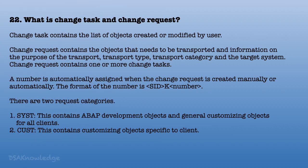What is a change task and change request? A change task contains the list of objects created or modified by a user. A change request contains the objects that need to be transported and information on the purpose of the transport, transport type, transport category, and target system. A change request contains one or more change tasks. A number is automatically assigned when the change request is created; the format is SIDK-number. There are two request categories: SYST, which contains ABAP development objects and general customizing objects for all clients; and CUST, which contains customizing objects specific to a client.